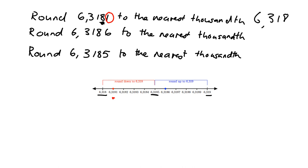Now if we look at the next one — 6.3186, rounding to the nearest thousandth — we look at the digit just to the right of it, and that is a 6. Six is bigger than 5, and so we will round up to 6.319.